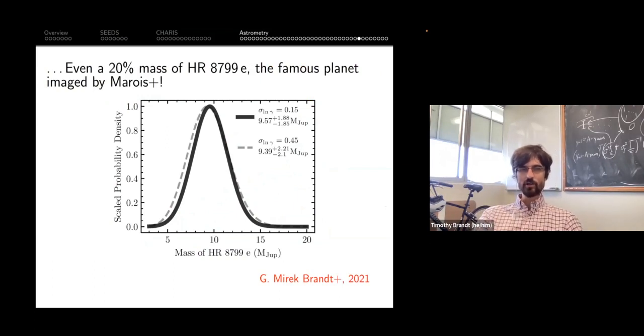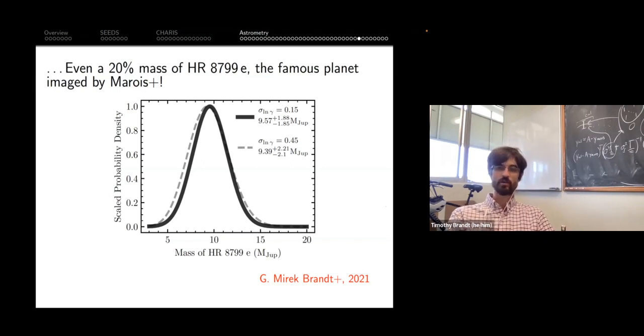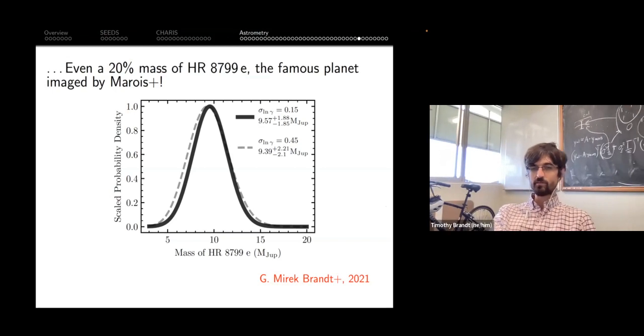You can even play this game on HR8799, at least on the innermost planet. We know the orbits of all of these planets. If you're willing to make the reasonable assumption that they're all basically the same luminosity, they should have at least broadly similar masses. Then with that very minor assumption, we can say that the innermost planet is 9.5 plus or minus 1.9 Jupiter masses. HR8799e, that famous innermost planet in the four-planet HR8799 system, can now be directly weighed. This is applying to more and more planets and will only get better with future Gaia data releases. This is work done by my former student Mireille, who unfortunately has just left the field.